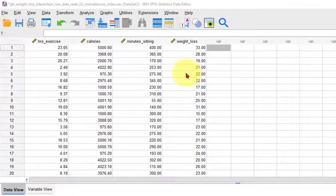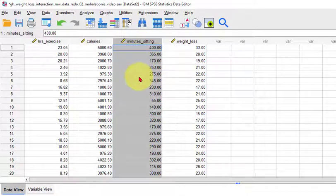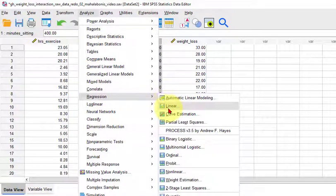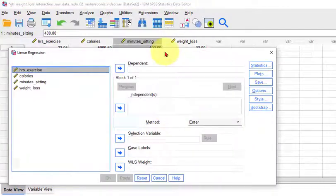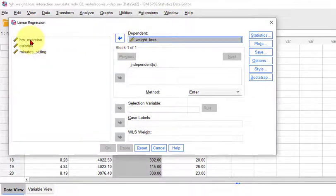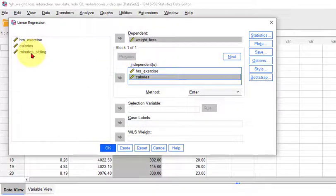So here's our model again. Weight loss is the DV, and the predictors are exercise, calories, and minutes sitting. In this video, we're just going to check homoscedasticity. So you would go to analyze, regression, linear, and our DV is weight loss, and the independent variables are hours, calories, and sitting.